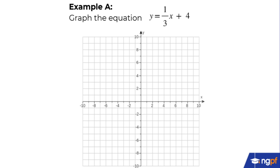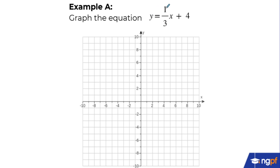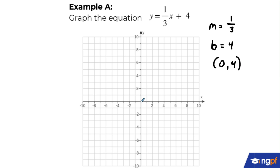Example A is y equals one-third x plus four. Using the form y equals mx plus b, the slope m is the number attached to x, which is one-third. The y-intercept b is the end value with no variable, which is four. Remember that four represents a location on the y-axis — it's actually the point (0, 4). So we've identified slope of one-third and y-intercept of (0, 4).